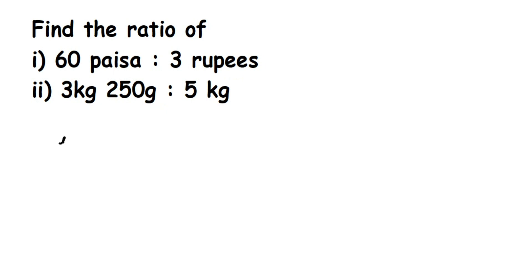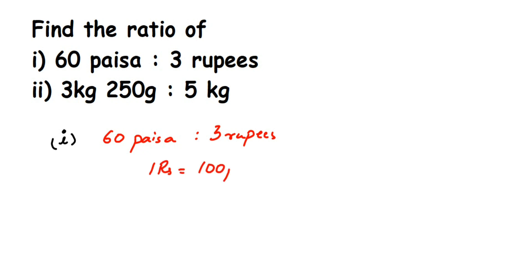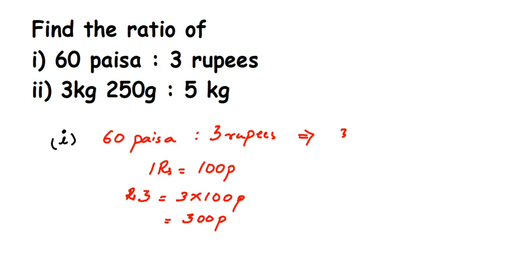Whenever you see this type of question, make sure you have the same units. Here they have given 60 paise and 3 rupees. I'm going to convert rupees into paise. We know that 1 rupee is equal to 100 paise. When converting a higher unit into a smaller unit, you multiply. So 3 rupees will be equal to 3 into 100 paise, which equals 300 paise. Now we're going to find the ratio: 60 paise is to 3 rupees.